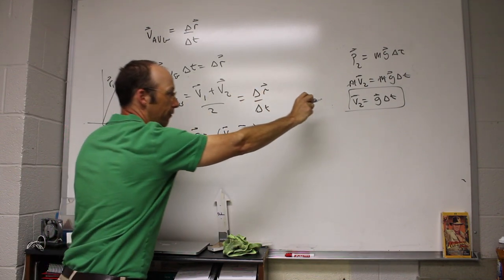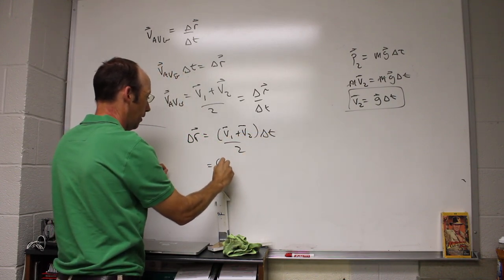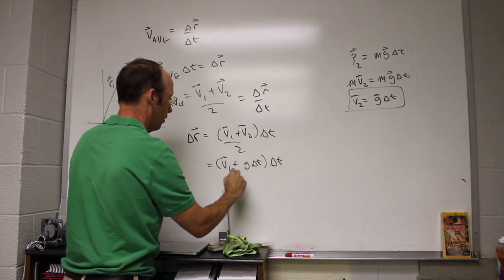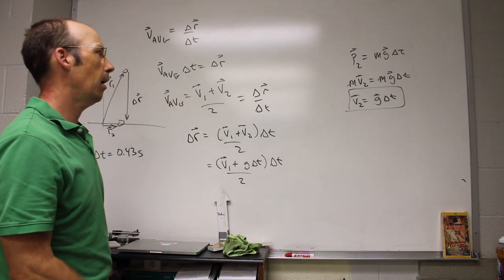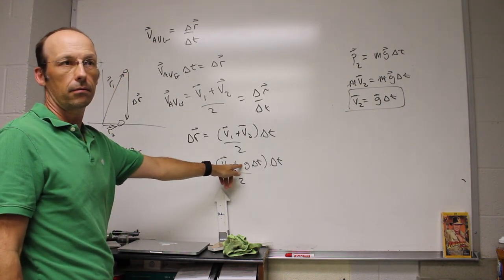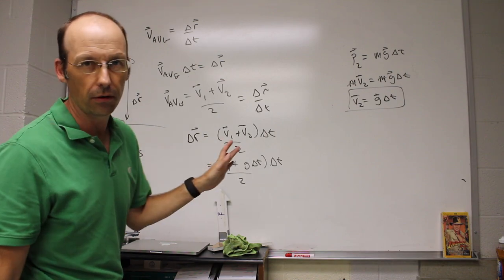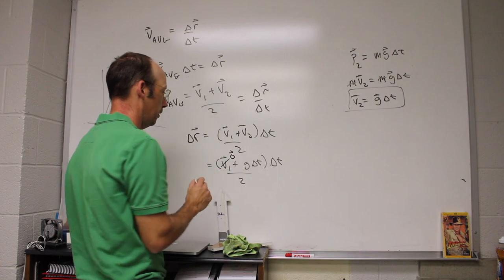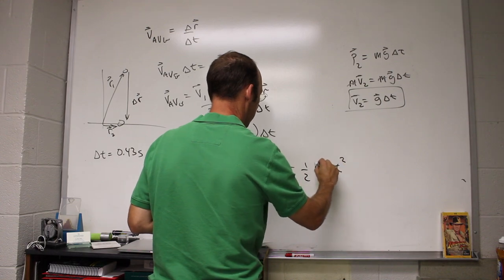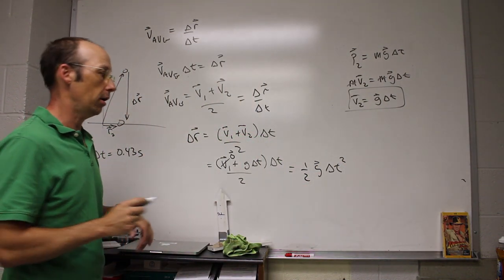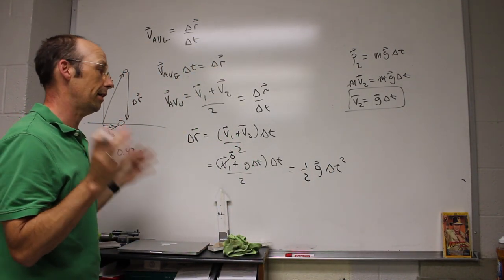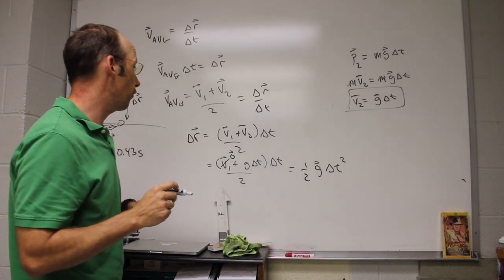Delta r is going to be v1 plus v2 over 2 delta t. And now I'm going to use that for v2 and put that in and I get v1 plus g delta t times delta t over 2. I cheated really because there could be another v1 in here. But v1 is 0. So now I get this one half g delta t squared. And that's my change in r. And you may have seen that equation before, that one half a t squared. That's exactly what that is. That's exactly where that comes from. Let's go ahead and solve for delta r.